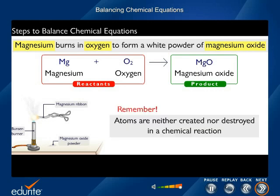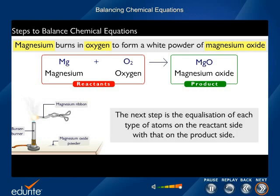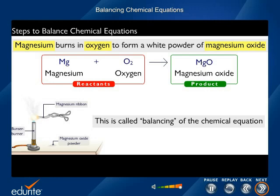Now, according to the principle of conservation of mass, no atoms can be lost or destroyed during a chemical reaction. So, the next step is the equalization of each type of atoms on the reactant side with that on the product side. This is called balancing of the chemical equation.